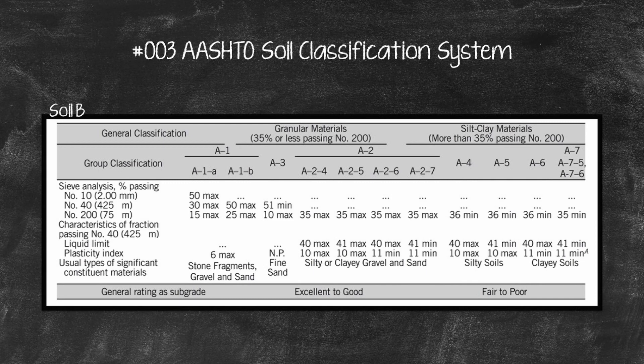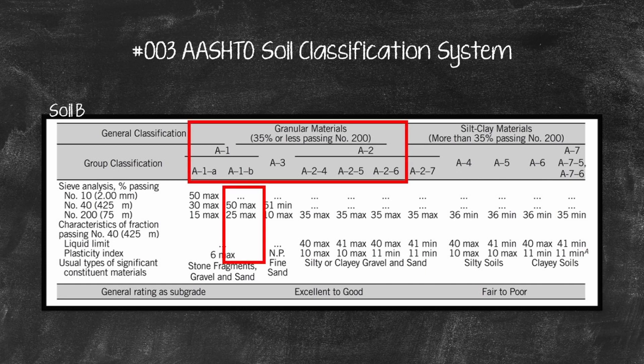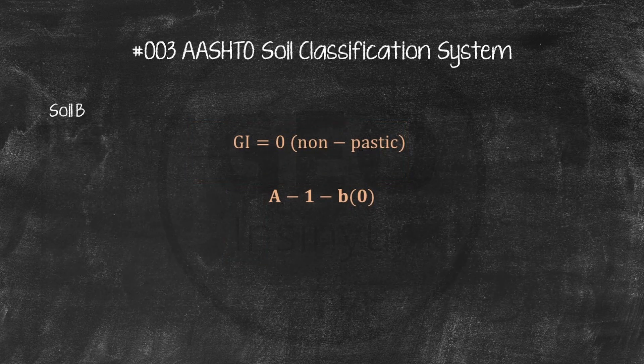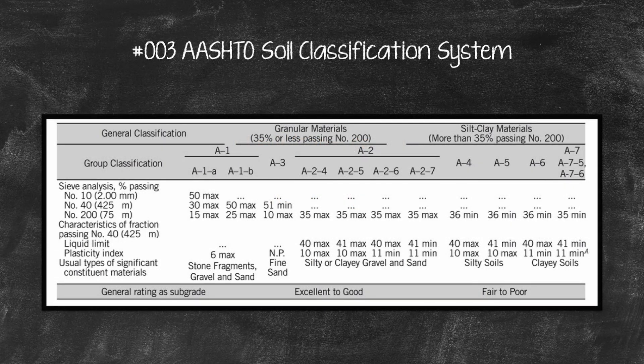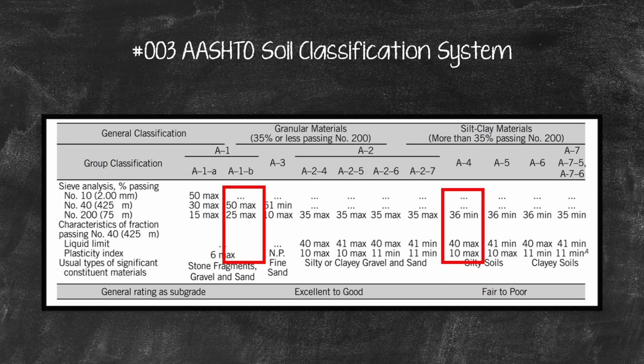Soil B, 20% passing number 200, thus make soil B a granular. Based on the Ashto table, soil B is A1B. Soil B is non-plastic. Therefore, GI equals 0. Hence, the classification for soil B is A1B, 0. Refer to Ashto table to decide which soil is better for a subgrade material. According to Ashto table, soil B, A1B, is an excellent material for a subgrade. Soil A is fair to poor. Soil B is then the preferable material.